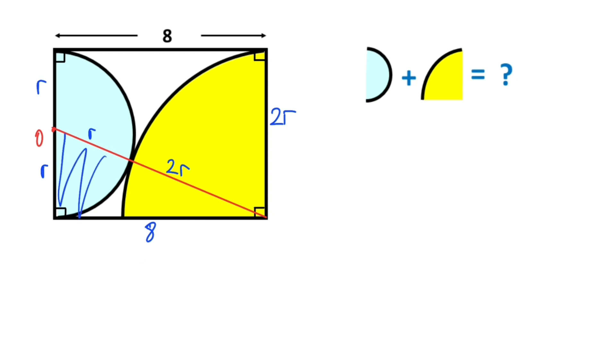Finally, if we apply the Pythagorean theorem, we get the value of r. So r² + 8² = (3r)², which means r² + 64 = 9r². Therefore, 64 = 8r², which means r² = 8.